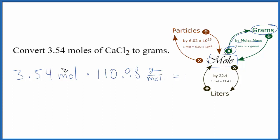So all we have to do is multiply these two numbers together. When we do, moles on top and bottom cancel out. We're left with grams. When we multiply these numbers together, we get 381.61 grams of CaCl2 in that 3.54 moles.